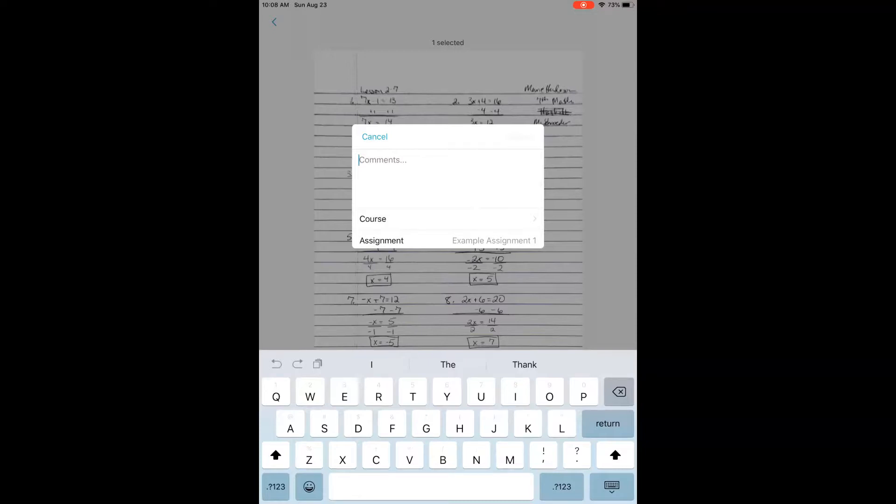...and then just like I had in my previous video about submitting assignments, I would select the course where I want to submit it. I would make sure I have the correct assignment name selected. And once that's true, I would tap Submit in the top right corner.